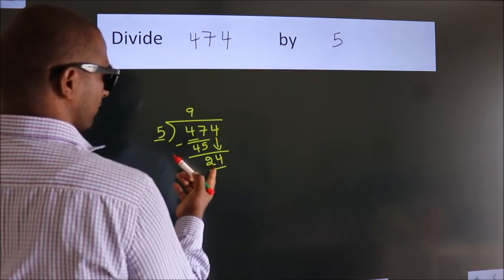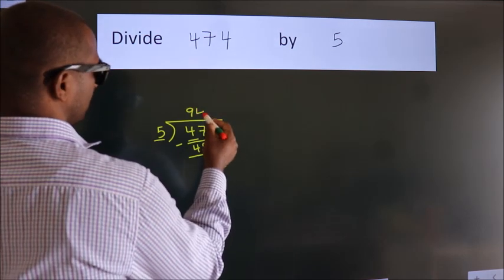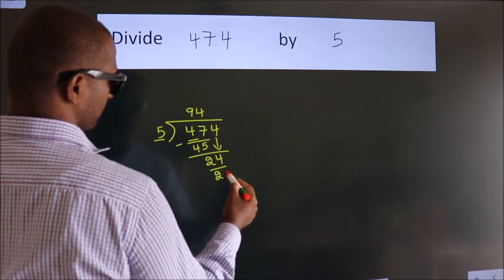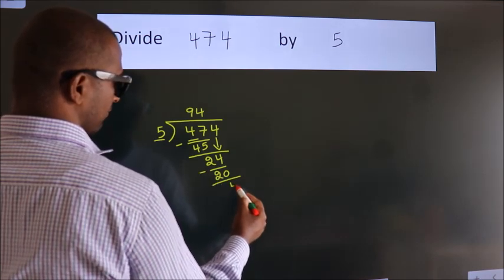A number close to 24 in the 5 table is 5 fours, 20. Now, we subtract. We get 4.